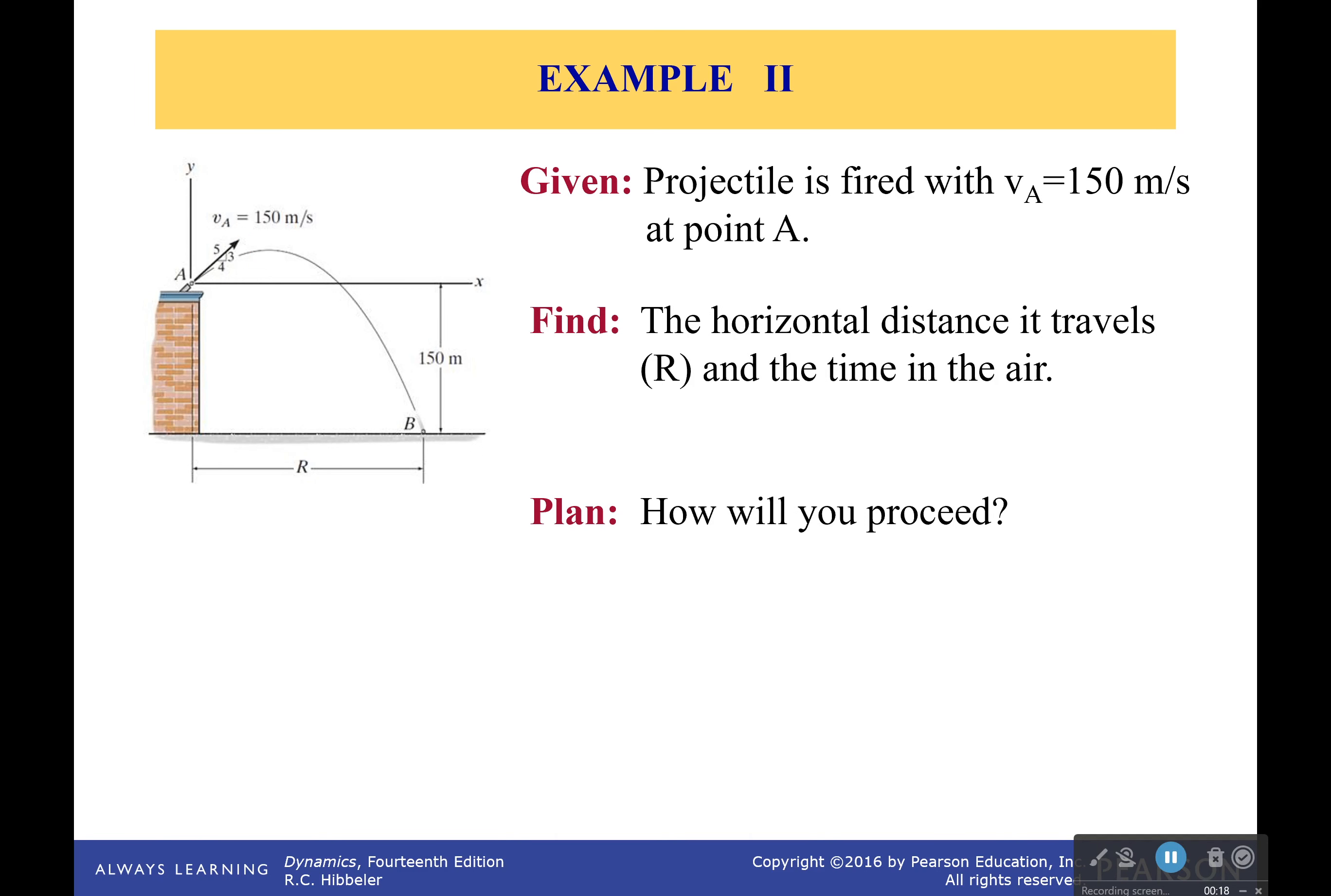We know initially that the projectile is fired with a velocity of 150 meters per second, and we want to figure out the horizontal distance it travels and the time in the air. How are you going to proceed?